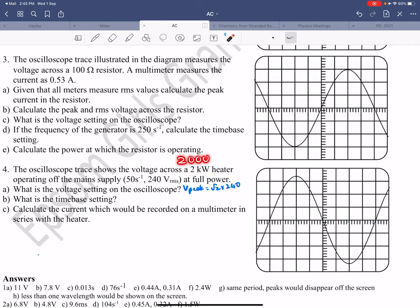So 2 kilowatt is 2000 watts, operating off the main supply. The frequency is 50 hertz and the RMS voltage is 240 volts. What is the voltage setting on the oscilloscope?